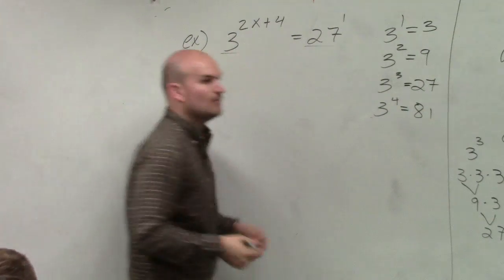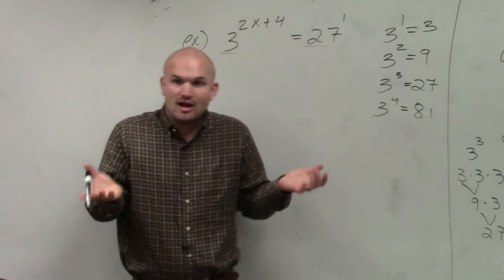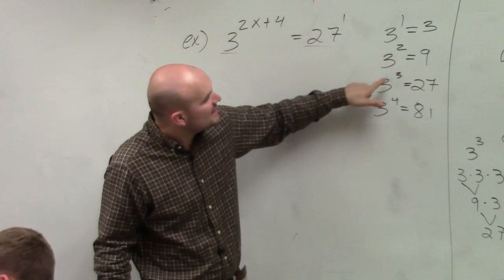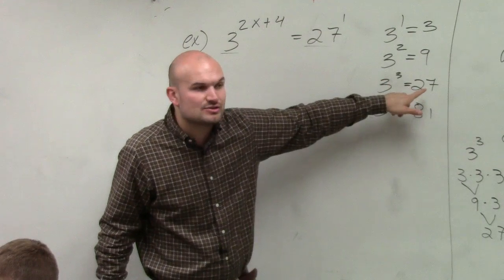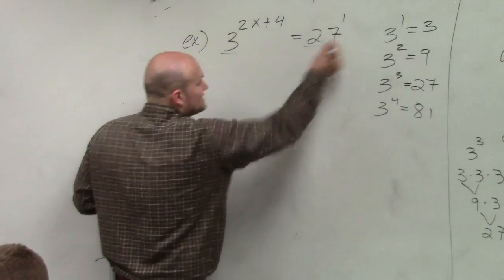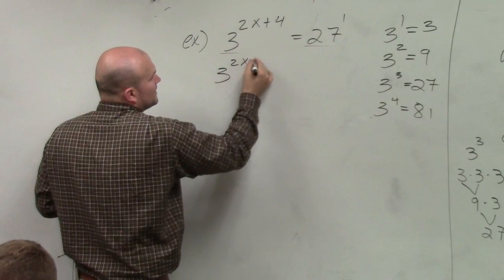3 to the fourth is 81. You can just go down the list. 3 cubed is 3 times 3 times 3. So 3 cubed is the same thing as 27. Would everybody agree? So now what I do is I replace 27 with 3 cubed.